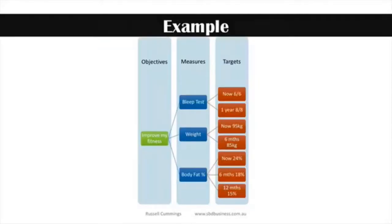As a personal example, if we want to improve fitness, some of the measures might be a bleep test, which measures your level of fitness. Currently we're at six and six, but in one year we'd want to be at eight and eight. For weight, you might say you're now 95 kilograms and in six months you'd like to be back to 85 kilos. Another measure is body fat — currently at 24%, with a target of 18% at six months and 15% at 12 months. These are all measures that help you determine whether you're actually improving your fitness.